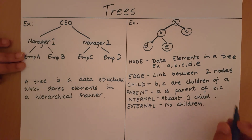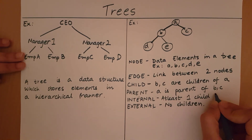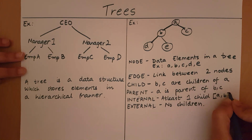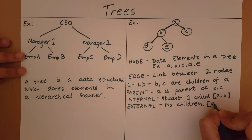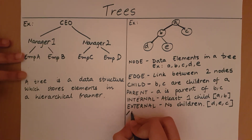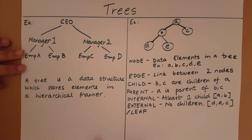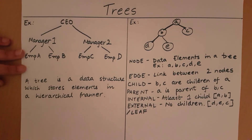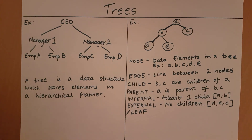So the internal nodes in this example were A and B. The external nodes were D, E and C. An external node is also referred to as a leaf node. So when I say C is a leaf node, I mean that C is an external node and that means C has no children.